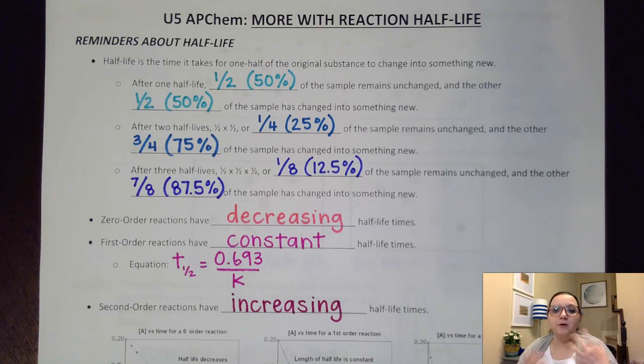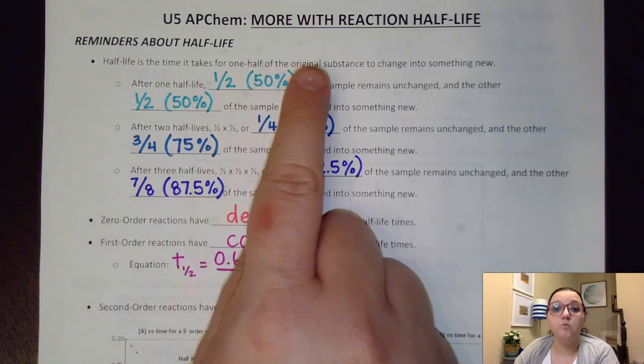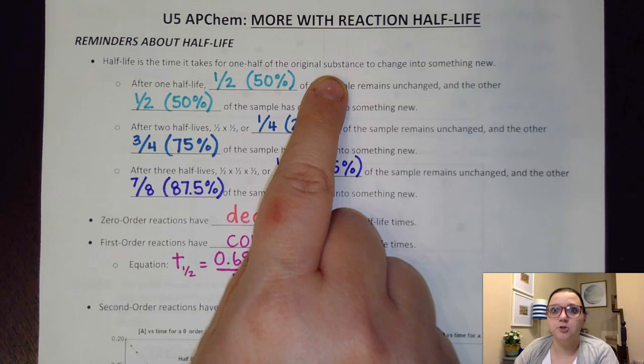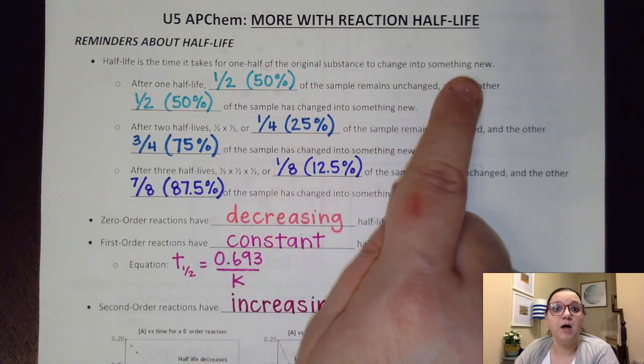What we're going to do in this video is a bigger discussion on what half-life really actually represents, and we're also going to look at some other formulas that I could use with regards to half-life. To start us off here, half-life is the time it takes for one half of the original substance, our original reactant, to change into something new, into some kind of product.